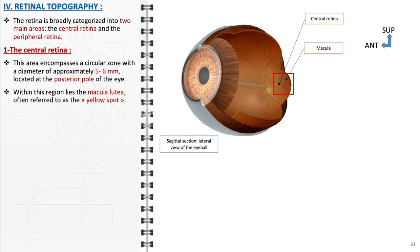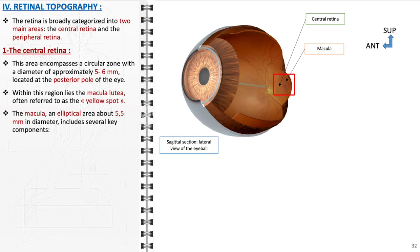A prominent feature here is the macula lutea, commonly known as the yellow spot. This region of the retina has the highest density of cone photoreceptors and is responsible for the sharpest vision. The macula itself is an elliptical area, about 5.5 mm in diameter, comprising several vital components.